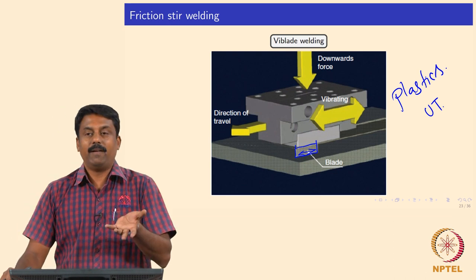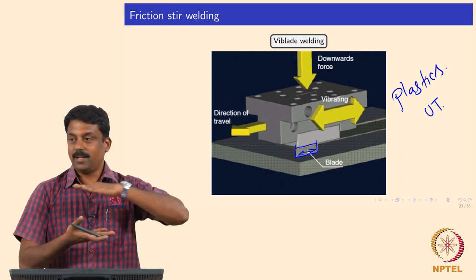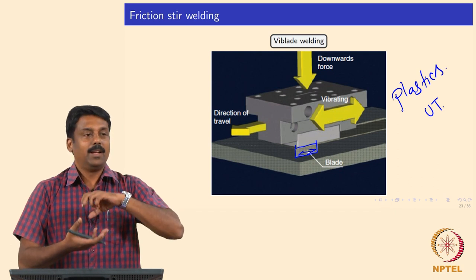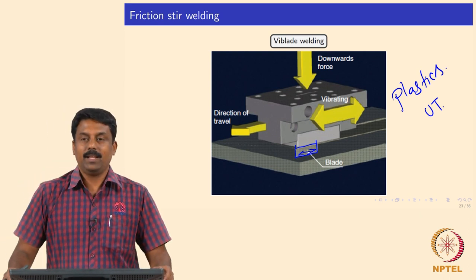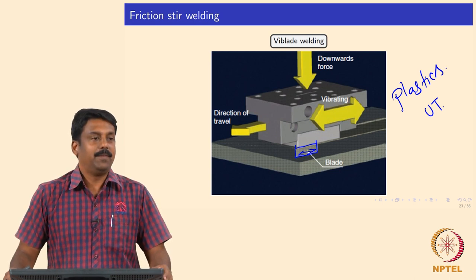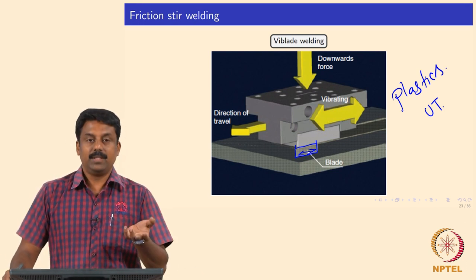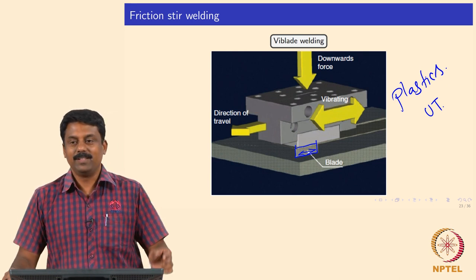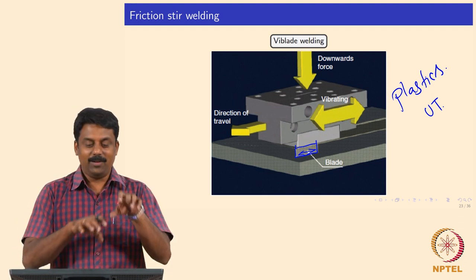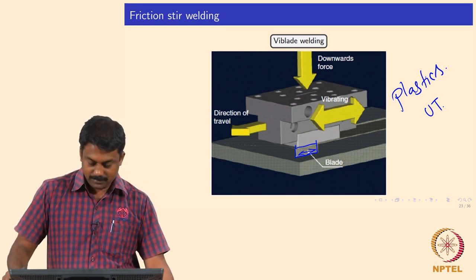Equipment is now available to join wooden blocks and plywood by linear friction welding. One block is kept fixed, the other is vibrated, and a downward force is applied to join two wooden blocks. Bamboos are also welded using angular rotation welding.